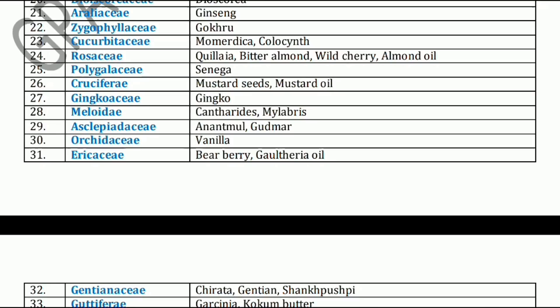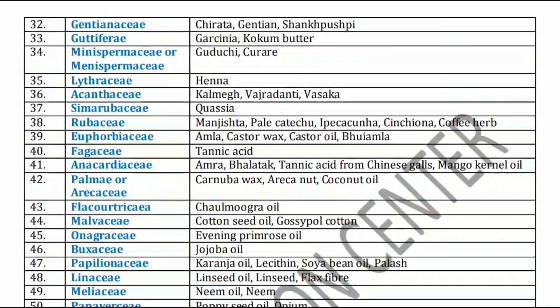Next is the Meloidae family. Meloidae family includes Cantharis and Mylabris. Next, Asclepiadaceae family. Asclepiadaceae family includes Gudmar and Anantamool. Next, Orchidaceae family. Orchidaceae family has Vanilla, used as a flavoring agent. Next, Ericaceae family. Ericaceae family has Bearberry and Gaultheria oil.